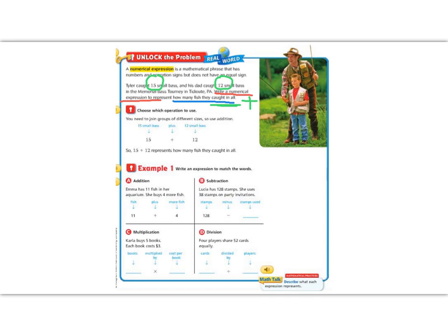So let's look at the bottom. It says you need to join different groups. So we're going to add, right? That's what we just said. So we have 15 plus 12. 15 plus 12 is how many fish they caught. We've now written a numerical expression.